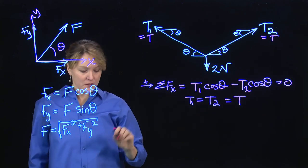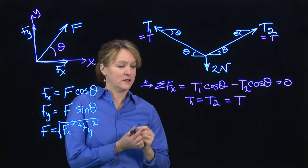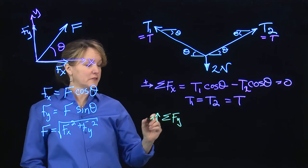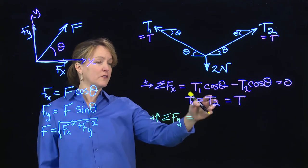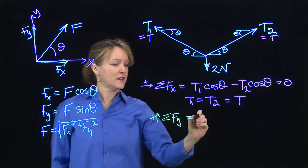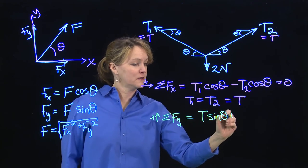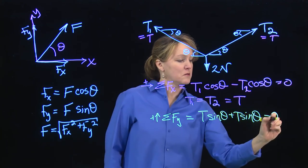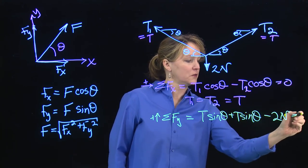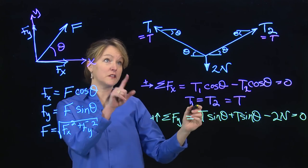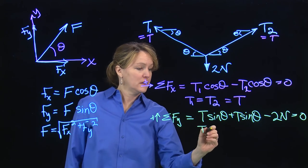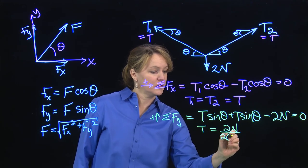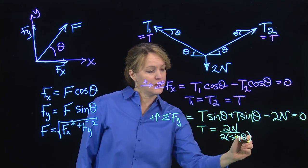But now we can move on to vertical equilibrium. So let's sum the forces in the y direction. I'll assume upward is positive. Since I found that they're equal, I'm just going to use the T notation now. So I can have T sine theta plus T sine theta minus 2 newtons all equals 0. And now I should be able to actually solve for that tension in the rope. The tension in the rope is 2 newtons over 2 times the sine of theta.